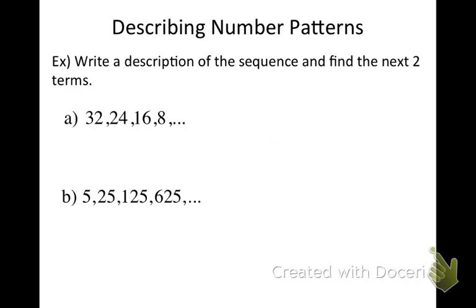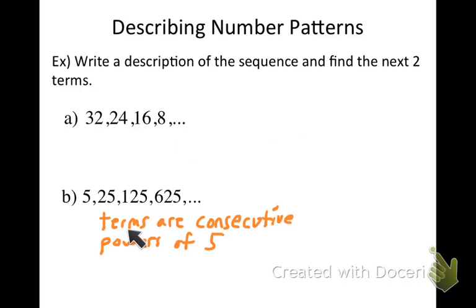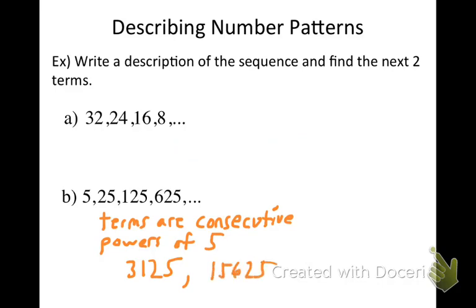But there are two different ways of describing this pattern. It turns out each of these numbers is a power of 5: this is 5 to the first power, 5 to the second, 5 to the third, 5 to the fourth. The most accurate way of describing that is that the terms are consecutive powers of 5. In the next few terms we would have 5 to the fifth power, which is 3,125, and then 5 to the sixth power, which is 15,625.